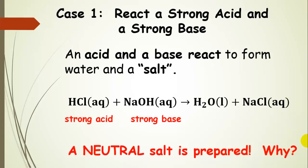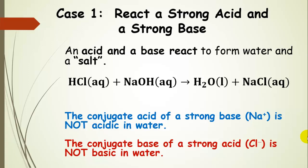Let's look at the first case — the simplest case — where we react a strong acid and a strong base. They react to form water and sodium chloride, and we get a neutral salt. Using the conjugate seesaw idea: the conjugate acid of a strong base — that sodium cation — is not acidic in water. And the conjugate base of a strong acid — the chloride anion — is as wimpy as you can get; it does not change the pH of water. Neither reacts with water to produce hydronium or hydroxide.